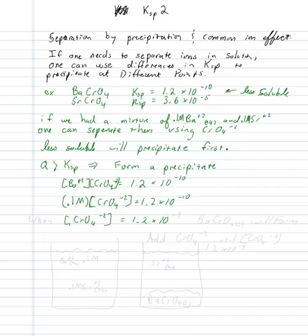Essentially, let me draw a diagram. Let's say we have a solution of barium ions and strontium ions, both 0.1 molar. When we add chromate until its concentration is equal to 1.2 times 10 to the negative 9, it will form that solid.